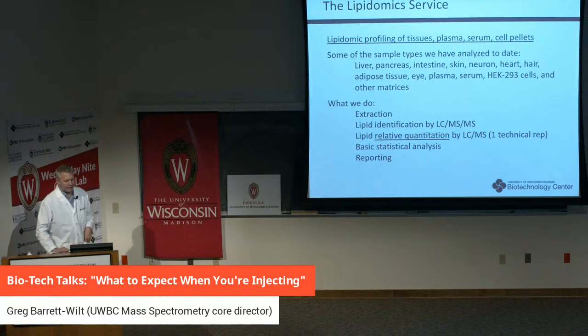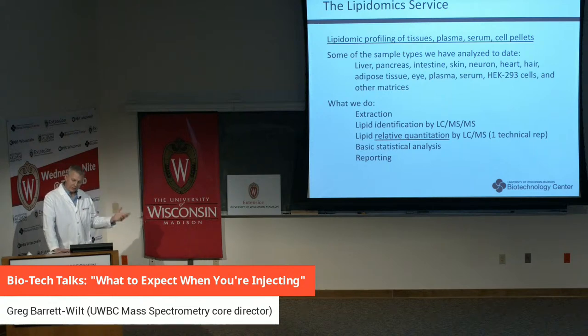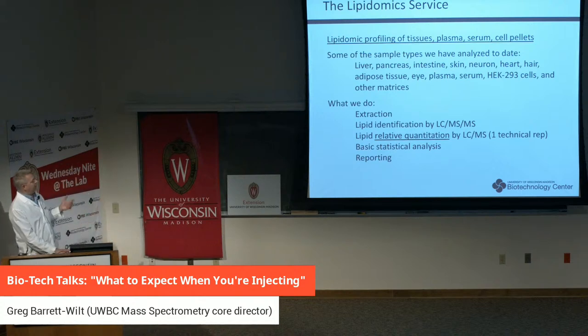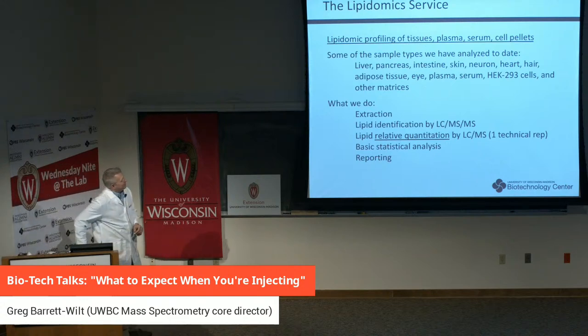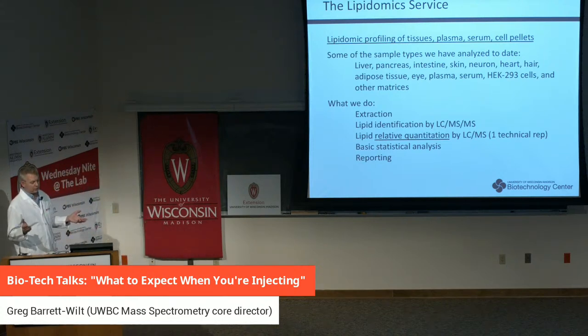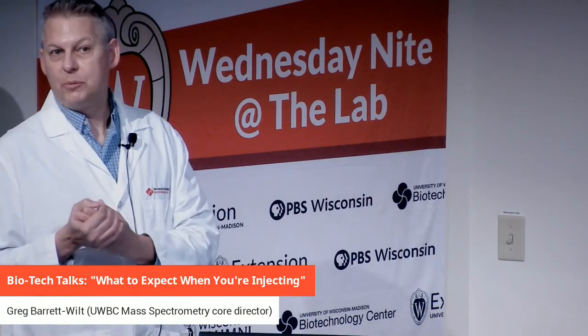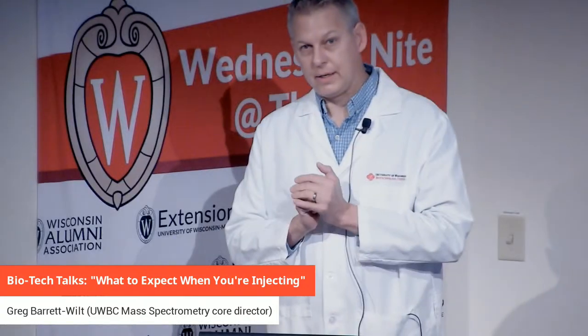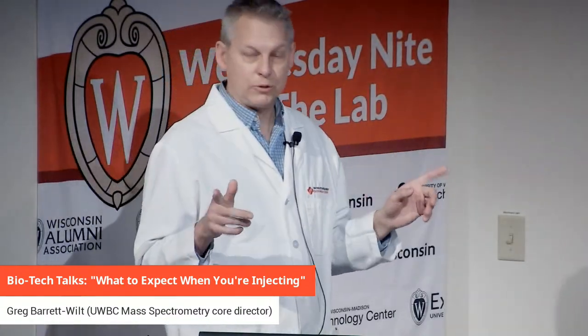The lipidomics service is a profiling of tissues — any number of solid tissues, plasmas, serums, cell pellets, and so forth. Tissue types we've worked on include liver, pancreas, intestine, skin, neuron, heart, hair, adipose tissue, eye, plasma, serum, HEK 293 cells, and other matrices. You drop off samples in tubes — solid tissues or fluids — we do the extraction, lipid identification using LC-MS-MS, relative quantitation using LC-MS with one technical replicate injection per sample, basic statistical analysis, and reporting.